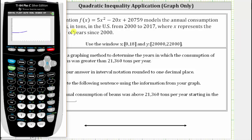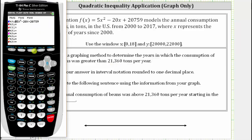Here's f of x on the coordinate plane. Because we're trying to determine the years in which the consumption is greater than 21,360 tons per year, we will now graph the constant function y equals 21,360. So we press y equals, press enter to go to y two, and enter y two equals 21,360, then press graph.